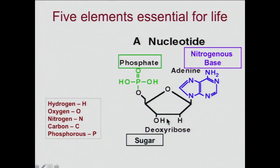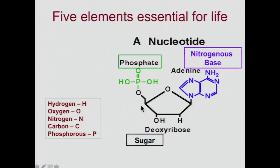We haven't focused much on the phosphate chain or the sugar — we wanted to look at the sequences that led to proteins being transcribed. But now we're looking at the physical elements that make up all parts of DNA: hydrogen, oxygen, carbon, nitrogen, and phosphorus, which is in the phosphate chain. Without these five elements you can't make DNA.